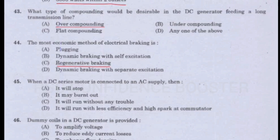Question number 45. When a DC series motor is connected to an AC supply, then: Option A - It will stop. Option B - It will burn out. Option C - It will run without any trouble. Option D - It will run with less efficiency and high spark at commutator. Answer is Option D: It will run with less efficiency and high spark at commutator.